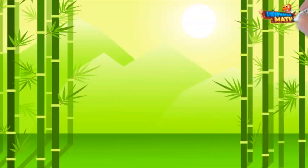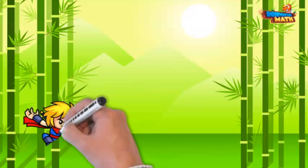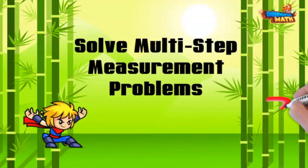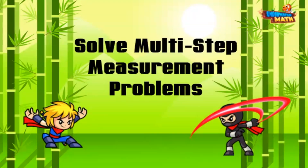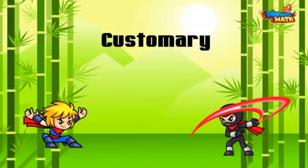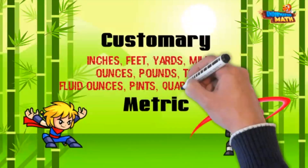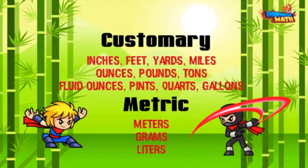Hey, welcome back! Hop in and help me beat this level, which has something to do with solving multi-step measurement problems. There are two different types of measurement systems at this level: customary and metric. If you don't remember those, maybe you should go back a level and complete the skill builder level.